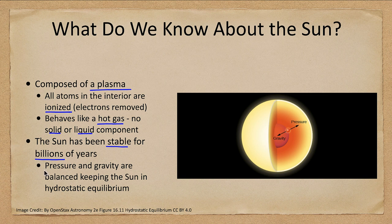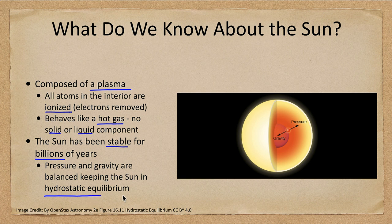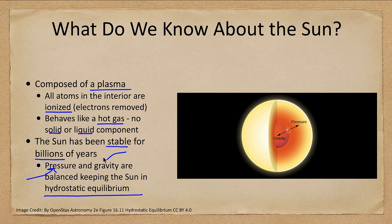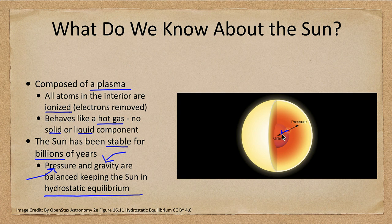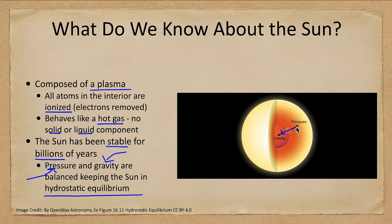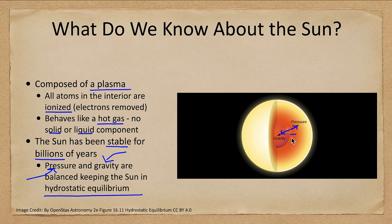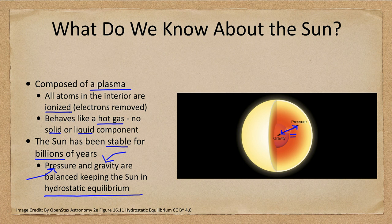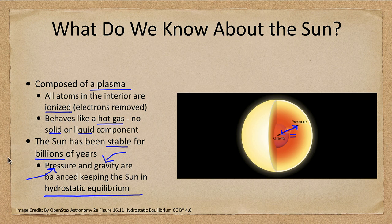If you recall the Stefan-Boltzmann law, the energy output of a star depends on the fourth power of the temperature. So a slight change in temperature, either up or down, will have a significant effect on the energy output and would make Earth too hot or too cold. So we know that the Sun has been in a very stable range for billions of years because life still exists here. This is done by what we call hydrostatic equilibrium, and that is where pressure and gravity are balanced that keep the Sun in this equilibrium. For any point in the Sun, gravity is trying to pull objects down to the center. There's a pressure from the interior from the energy generation that pushes outward, and these two balance exactly. If they were not, the Sun would either expand or contract. We will see what happens when it gets out of hydrostatic equilibrium when we look at the evolution of stars later on.